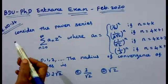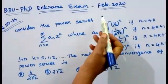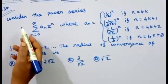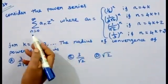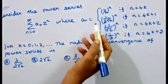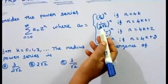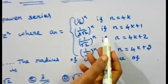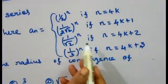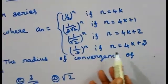Good morning students. We will discuss this video in February 2020. Question No. 34: Consider the power series summation n equal to 0 to infinity a_n times z^n, where a_n equals (1/2)^n if n equals 4k, equals (1/(2√2))^n if n equals 4k+1, equals (1/√2)^n if n equals 4k+2, and equals (1/3)^n if n equals 4k+3.